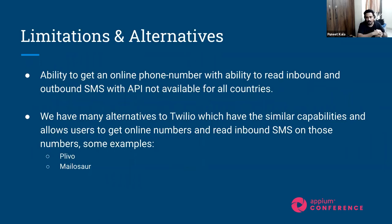What are the known limitations? One thing I'd like to highlight is that there are legal restrictions and not every country lets you buy an online number without going through a legal process. For example, in India you can still get an online number but you have to go through some legal documentation. You also have the possibility to forward SMS messages to these numbers — once you buy an online number you can start forwarding your SMS messages and reading them through the inbound API that Twilio provides.